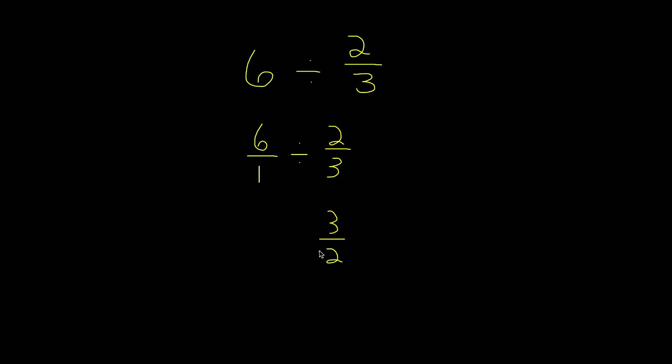The numbers just flip places. And then when we do the reciprocal, we change the divided by sign into multiplication. So 6 over 1 divided by 2 thirds is the same thing as 6 over 1 times 3 over 2.